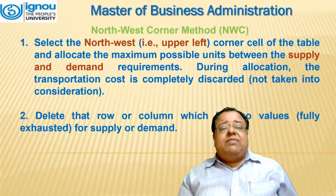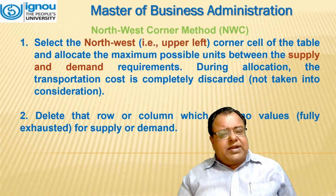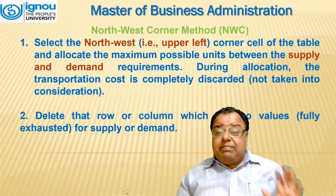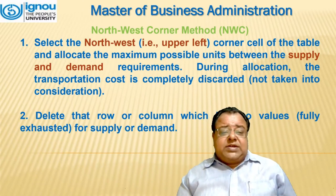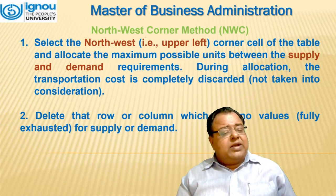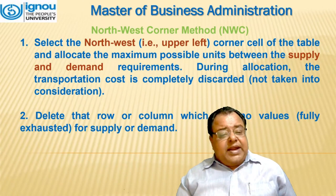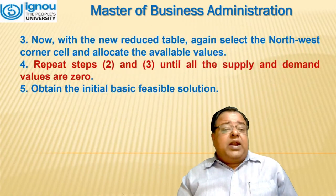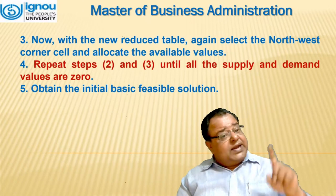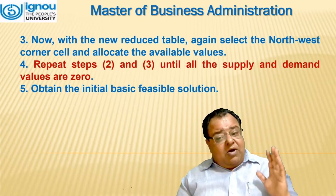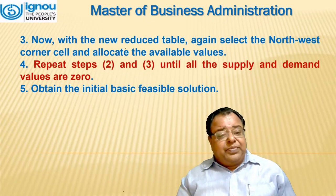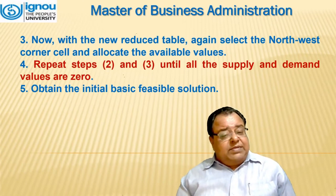The Northwest Corner Method is the simplest to adopt. Select the upper-left (northwest) corner cell and allocate the maximum possible units between supply and demand requirements — transportation cost is not considered during allocation. Delete the row or column that is fully exhausted. With the reduced table, again select the northwest cell and allocate. Repeat until all supply and demand values are zero, then obtain the initial basic feasible solution.